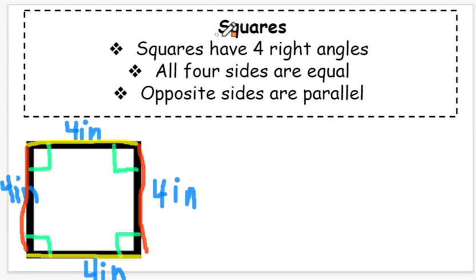So what makes a square a square? Four right angles, all four sides are equal—all four sides have to be equal—and finally, opposite sides are parallel. Same distance apart, will never meet.